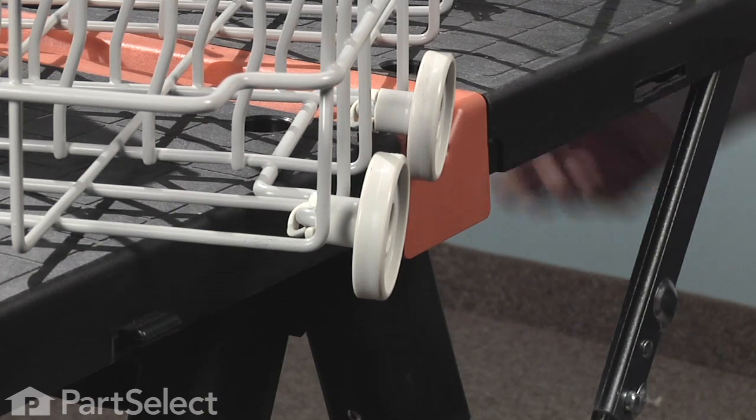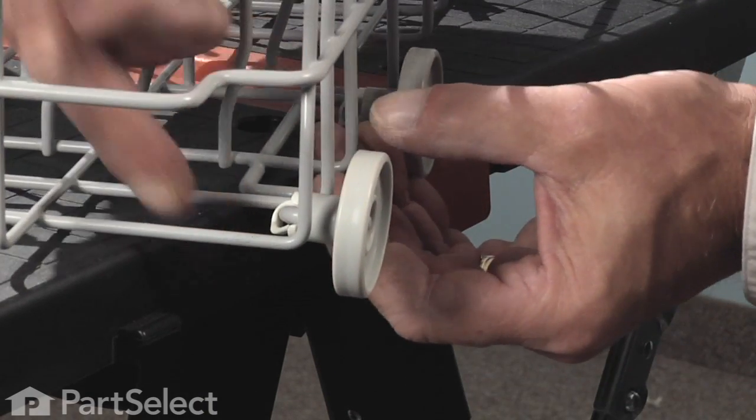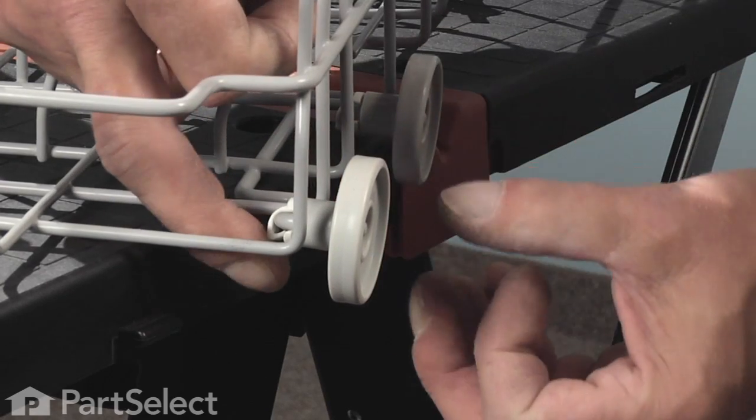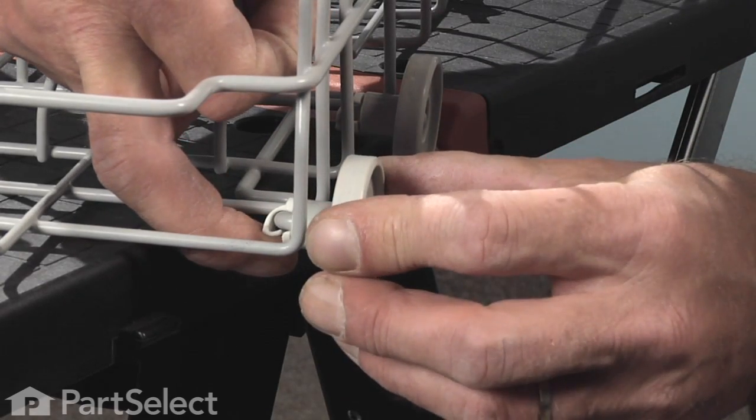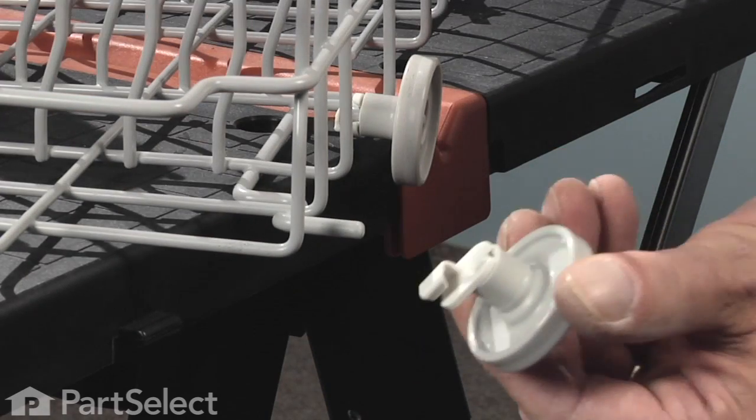To replace any of the lower rack rollers you need to locate the locking tab, pull it away from the tine, rotate it, and slide the wheel off.